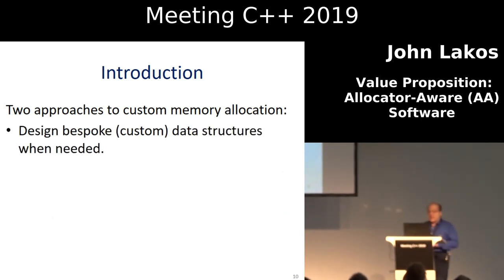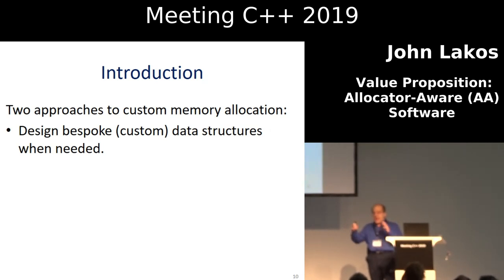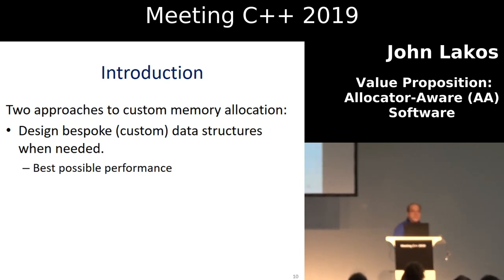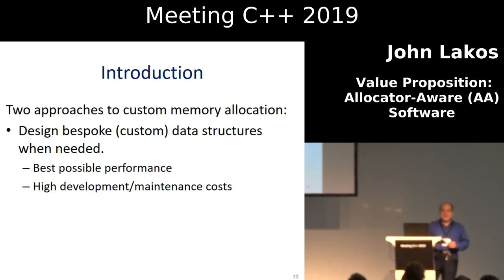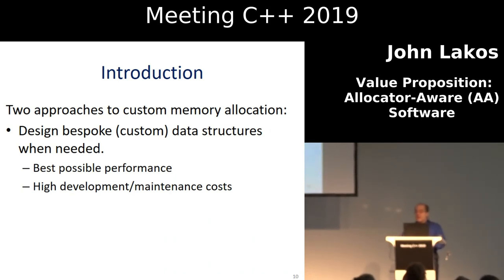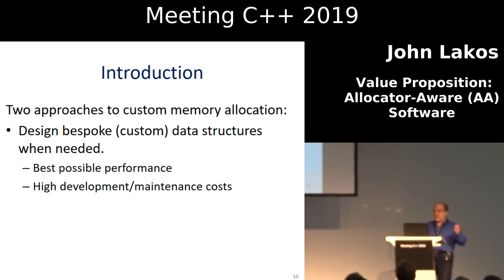Two approaches to custom memory allocation: you design it as needed yourself. You just need a data structure, it needs to manage memory in this way, and you write it from scratch. It gives you the best possible performance, obviously, because you're writing it for a specific purpose. However, there's a high development cost and a high maintenance cost. If you think about it from the point of view of a large company — application developers trying to solve business problems, and infrastructure developers focused on delivering prefabricated, hierarchically reusable solutions — then it's certainly better to have that ready to go. There's a very high development cost for writing your own custom data structures.